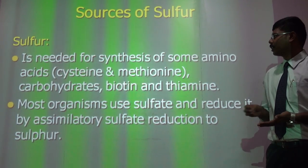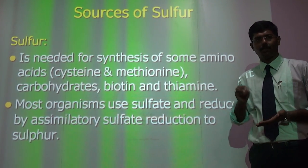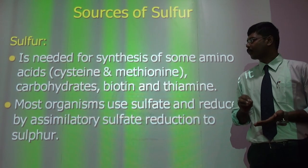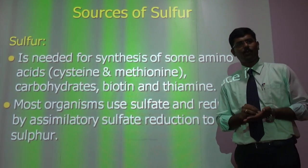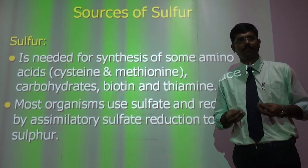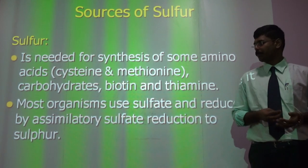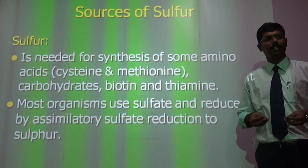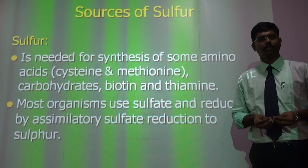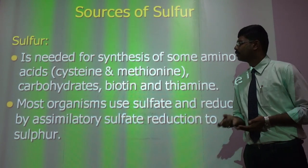Regarding sources of sulfur: sulfur is needed mostly for protein synthesis. Proteins are necessary compounds for the development of cell organelles and intracellular replication. Sulfur is mainly obtained by assimilating sulfate to sulfur from the atmospheric air.